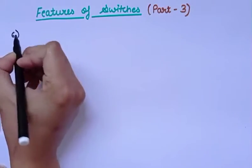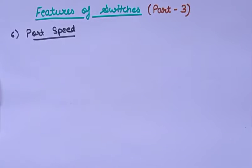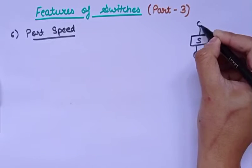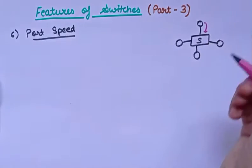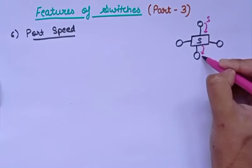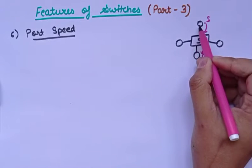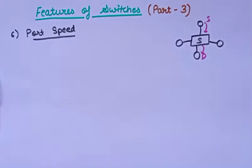The next point we have is port speed. The working speed of switches is quite high. Here we can see a switch with multiple devices connected. Data packets go from source to the switch, and the switch forwards them to the destination. The working speed depends on the port speed.